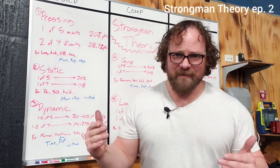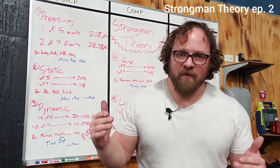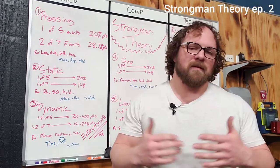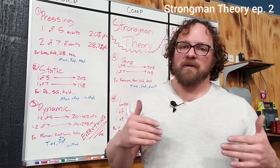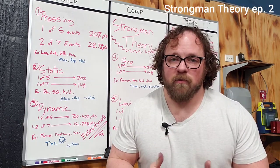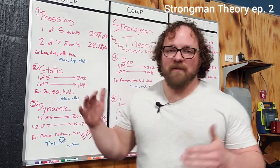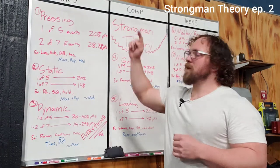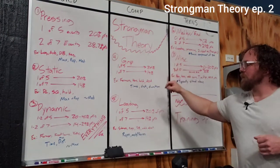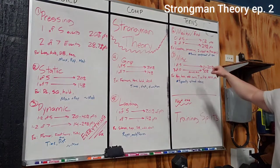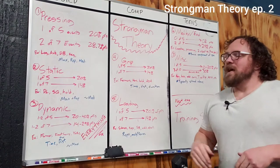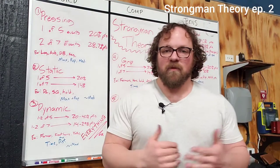This is very largely based on a competitive theory of strongman, so if that's not your thing, a different series might be better for you. The seven categories of strongman movement are: pressing, static movement, dynamic movement, grip movements, loading, medley and endurance movements, and miscellaneous movements.